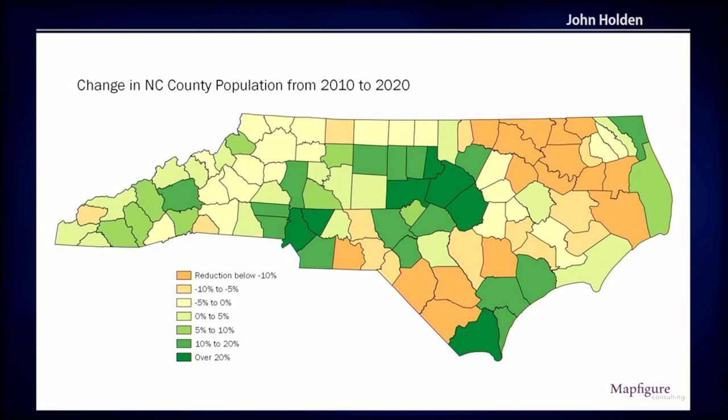And as this slide indicates, populations change. This is North Carolina in the United States. As John mentioned, this plug-in has been used internationally, but our examples will focus on the United States. This is the changes from 2010 to 2020. Shades of green indicate growth; shades of yellow and orange indicate population reduction. While North Carolina had exceptional growth — about 10% over this 10-year period — more than half of the 100 counties, actually 51 counties, had a reduction in population.